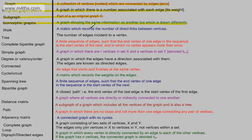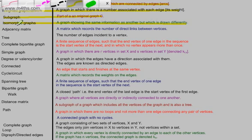A matrix which records the number of direct links between vertices. This is what we call an adjacency matrix. So let's go ahead and put that in there. So this tells me now the direct links between, for example, A and B in my network. A matrix which records the number of direct links between vertices.